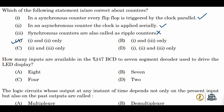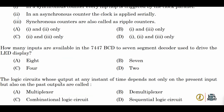Next: how many inputs are available in the 7447 BCD-to-7-segment decoder used to drive an LED display? The decoder is binary-to-7-segment. Binary codes are 4 bits, so 4 inputs are given and the corresponding digit appears on the display. The correct answer is option C. Next: in logic circuits, whose output at any instant depends not only on the present input but also on past outputs are called sequential logic circuits — option B is the correct definition.